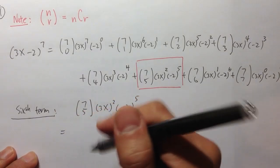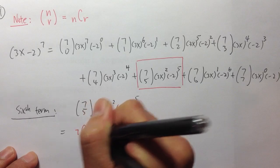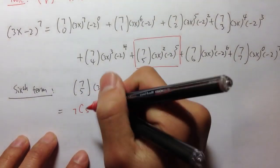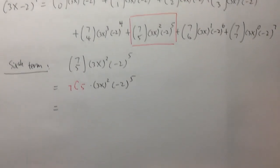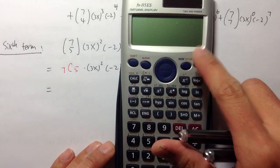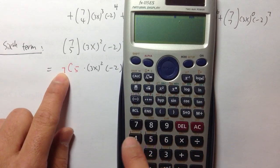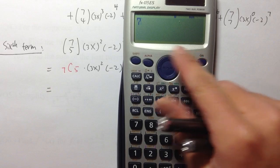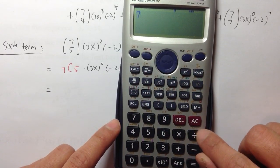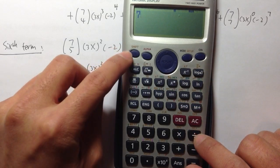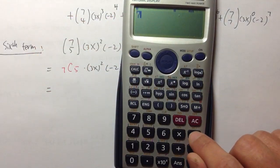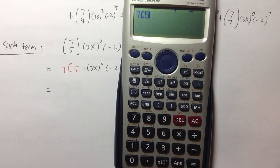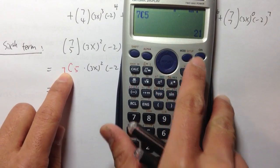For 7 choose 5, this is the same as entering 7 NCR 5 on the calculator. Let me show you: start with 7, then find the NCR key — on my calculator it's in orange so I need to hit shift first, then press that key, getting 7C, then enter 5. 7 choose 5 equals 21. So the binomial coefficient becomes 21.